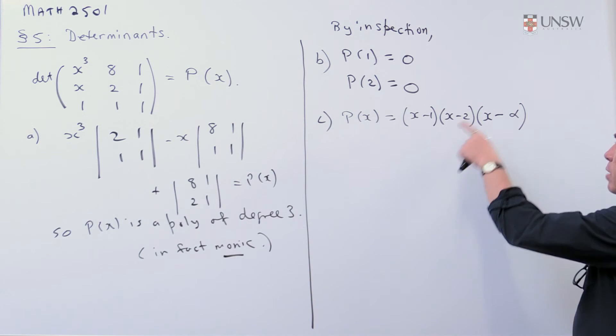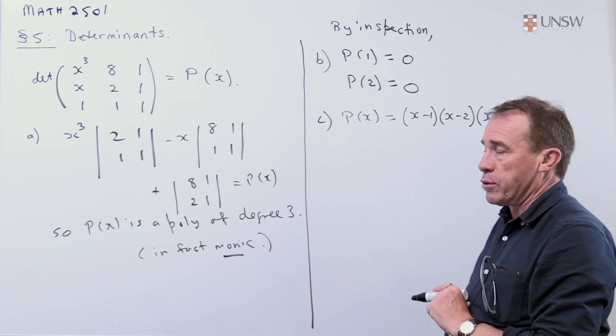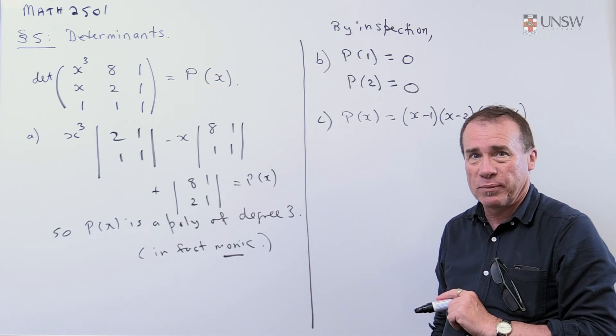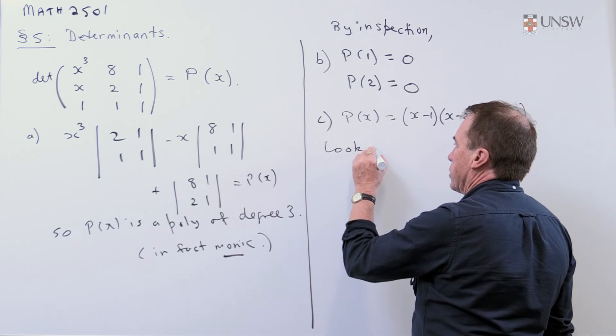So, I finish the problem if I can work out what the alpha is. Well, to do that, I'm just going to look at the constant term. That's the easiest way of working out what the alpha is.